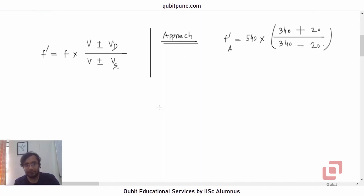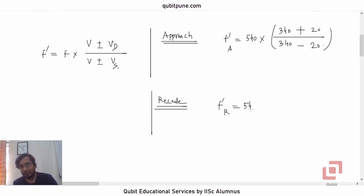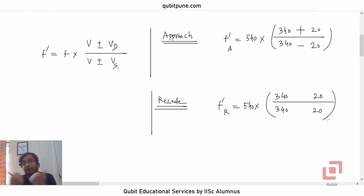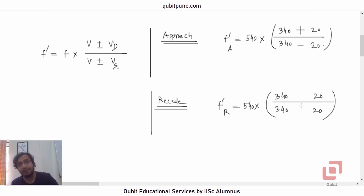Now let us calculate the receding frequency using the same formula. Let us call it f-prime-R. It will be 540 × (340 − 20) / (340 + 20). Because they are moving away from each other, the detected frequency will be less than 540 Hz, so the fraction must be less than 1 — giving (340 − 20) / (340 + 20).